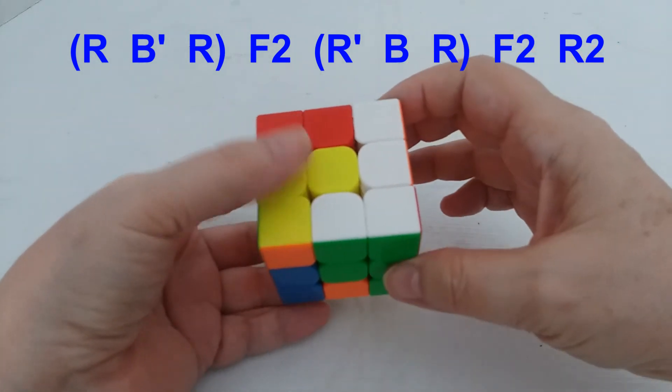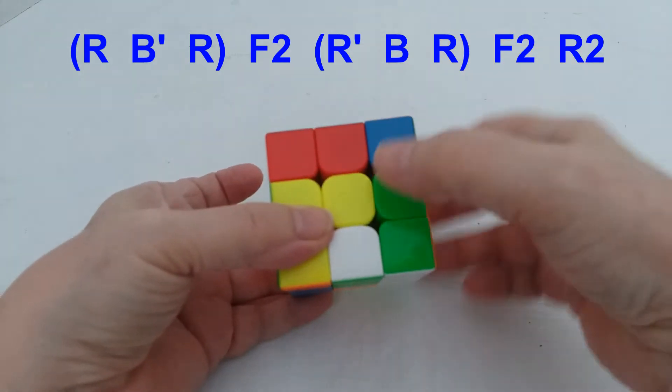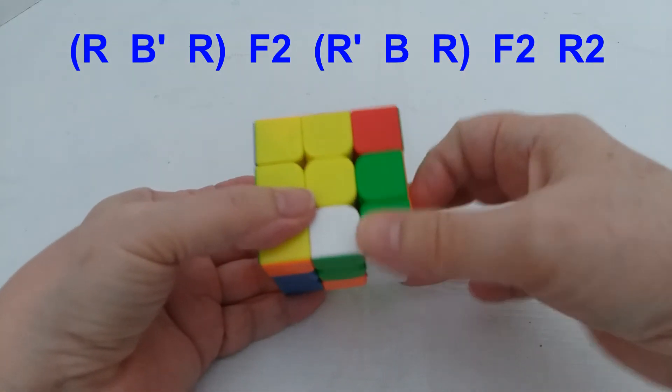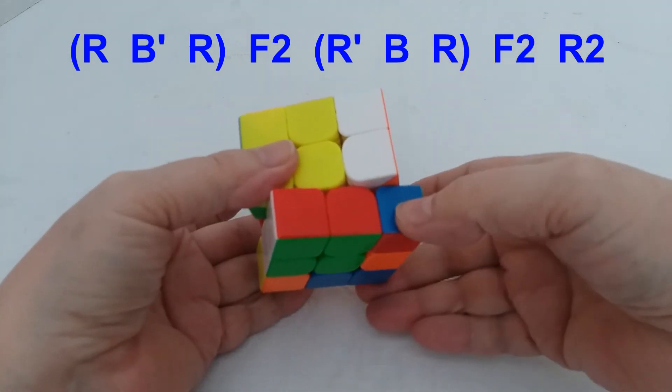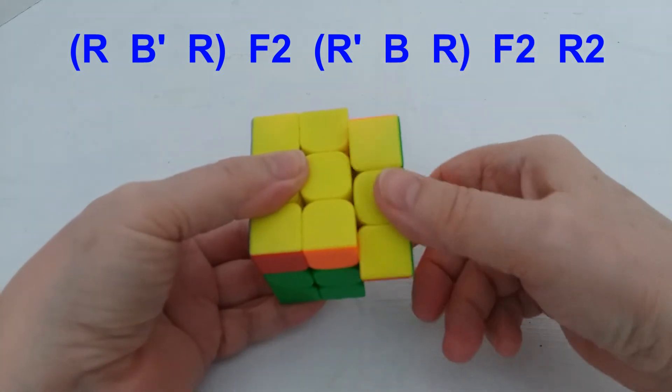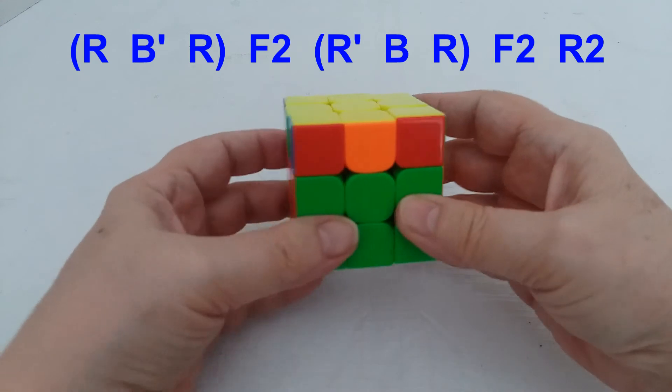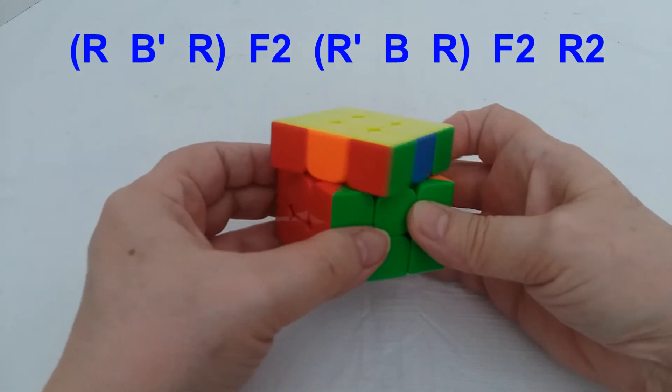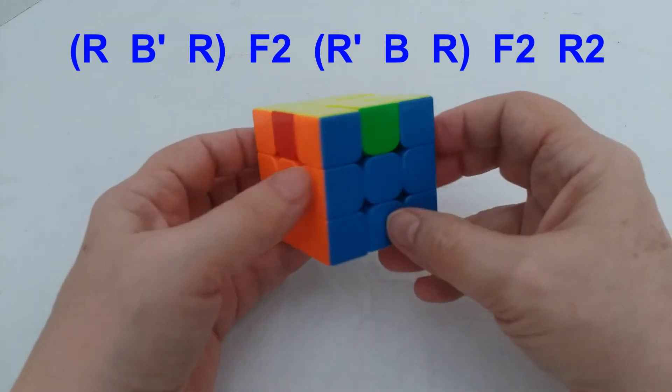I wonder if I said that right before. Then R prime, B, R, F2, R2. And so that has swapped those adjacent corners, and now if I rotate this top slice you'll see that all of the four corners are in their right place.